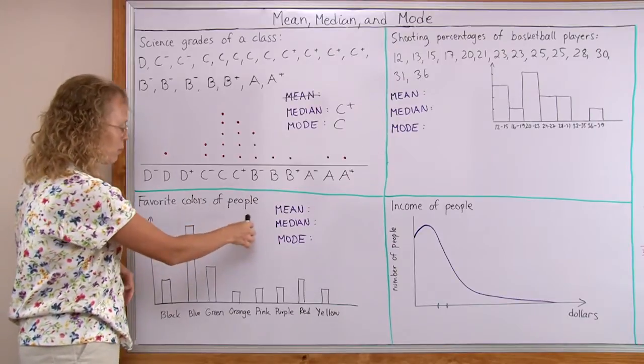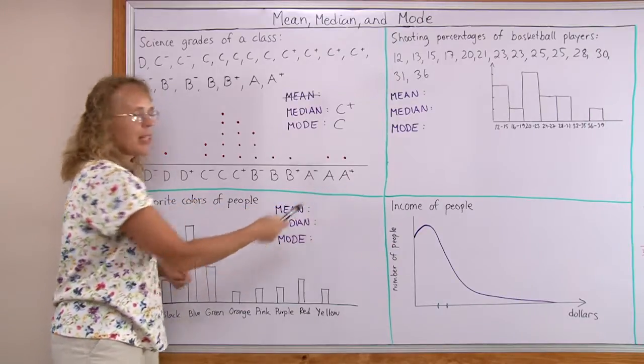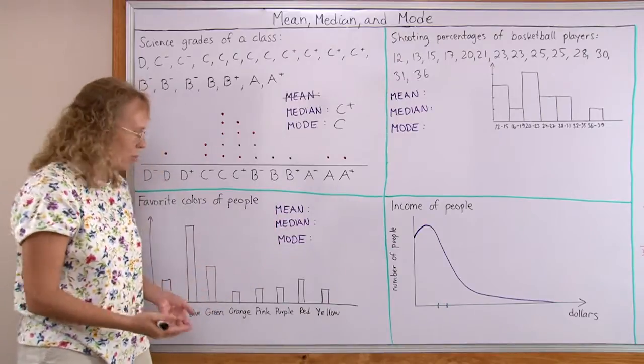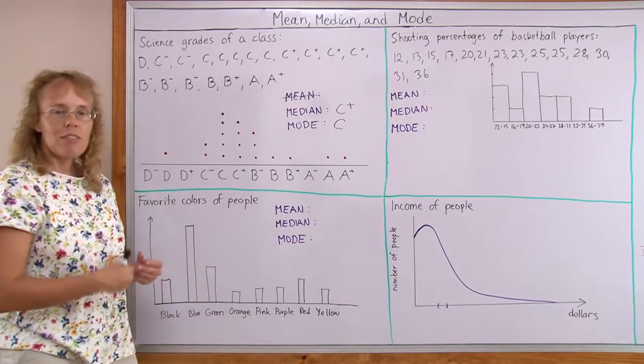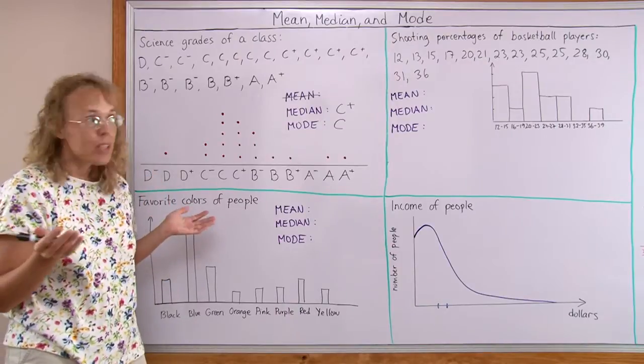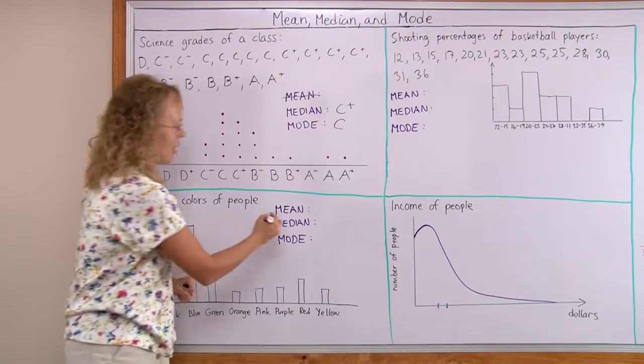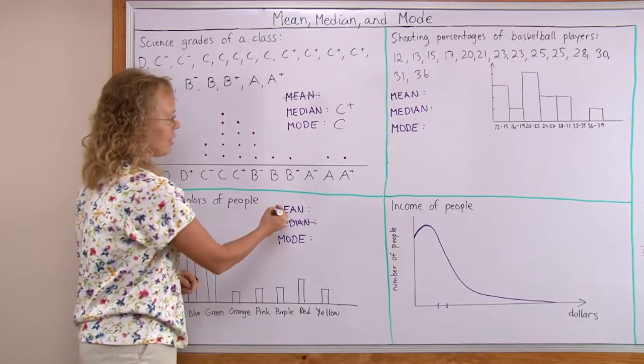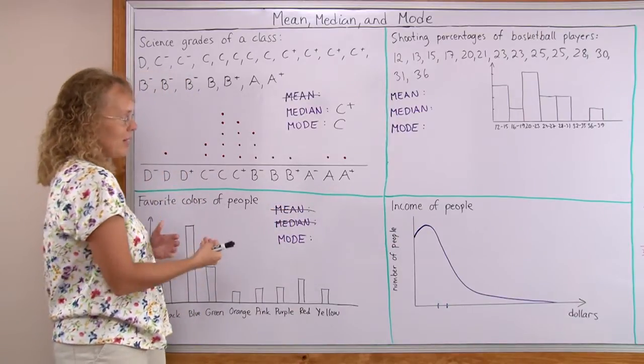It was people's responses to the question, what's your favorite color. So the responses would have been just individual words - black, black, blue, blue, blue, blue, orange, blue, blue, blue, pink. That's the list of values that was used to make this bar graph. And if you have a list of words like black, blue, pink, pink, you cannot put them in order to find the median. And you cannot add them and divide anything. You cannot calculate the mean either.